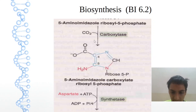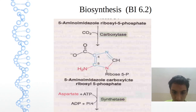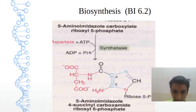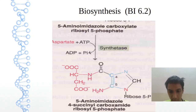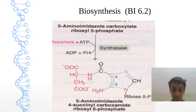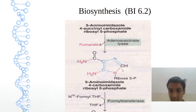Then on carboxylation, a carboxy group will be added. On synthetase, we have addition of 4-succinyl. 4-succinyl is added, and then there will be one change — that is the amide group, carboxylate. And then there is adenosuccinase.